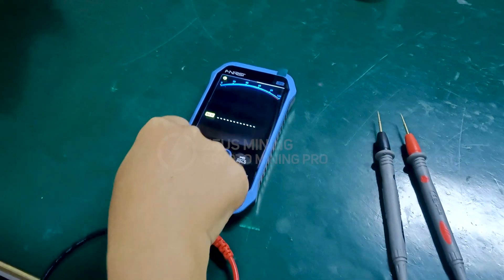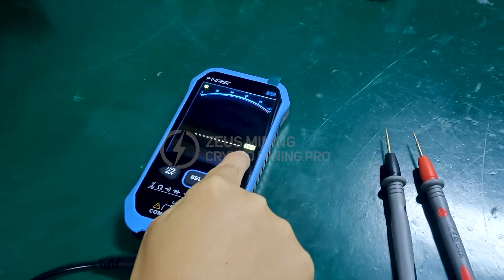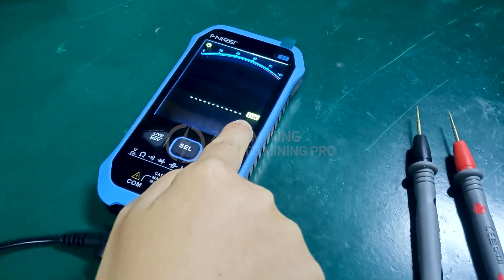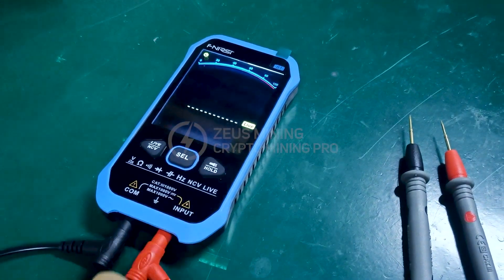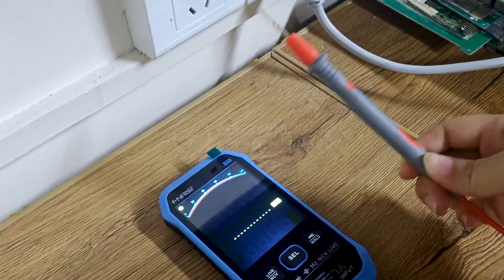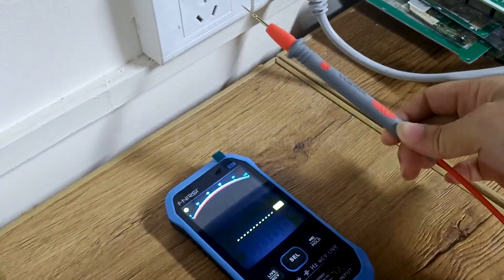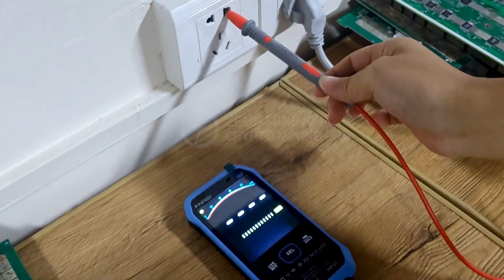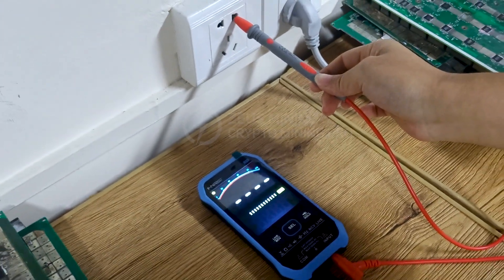Press the left button again and LIVE will be displayed on the right side of the screen. It can test the live wire and the neutral wire. At this time we only need this red test probe. Insert it into the socket. When we hear a beeping sound, it means it's the live wire. However, this hole doesn't make a sound, indicating it's the neutral wire.